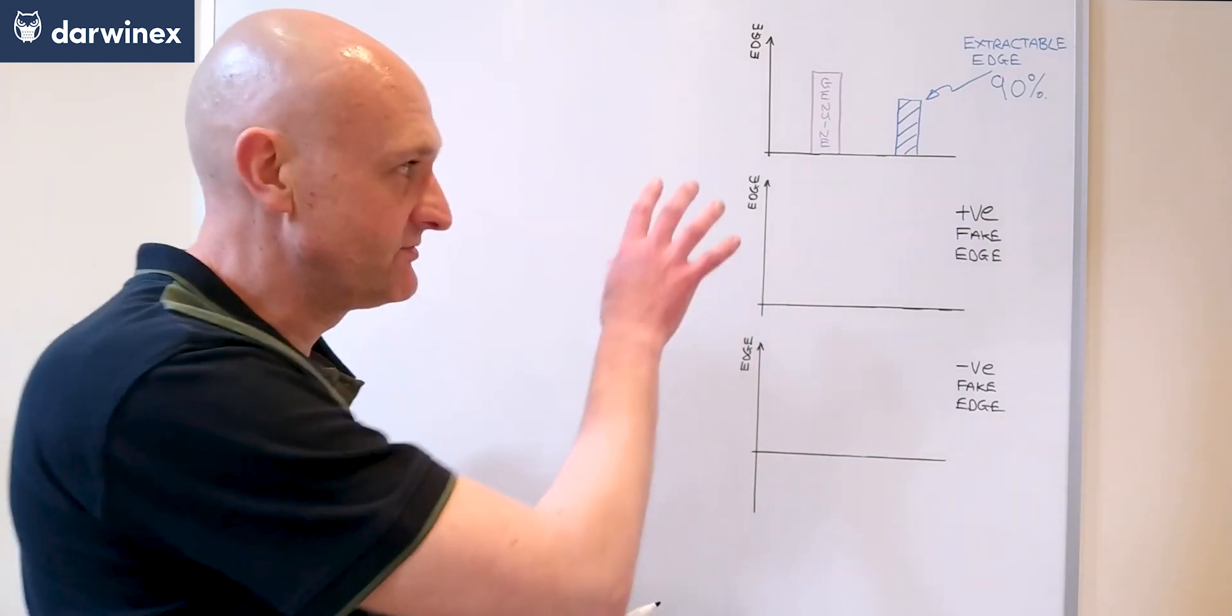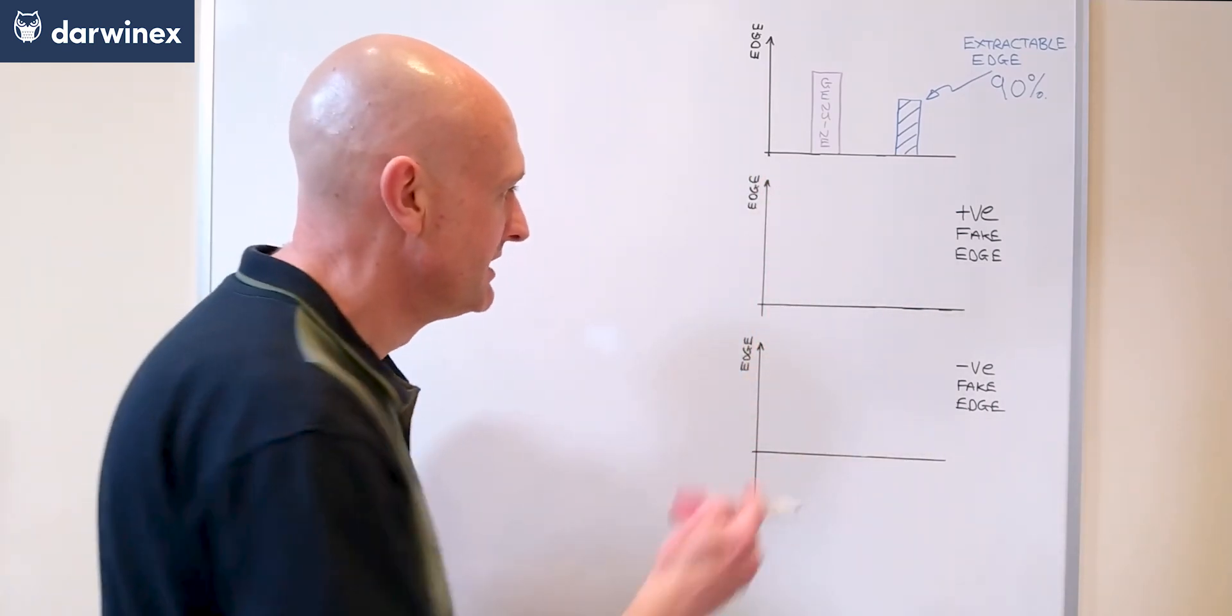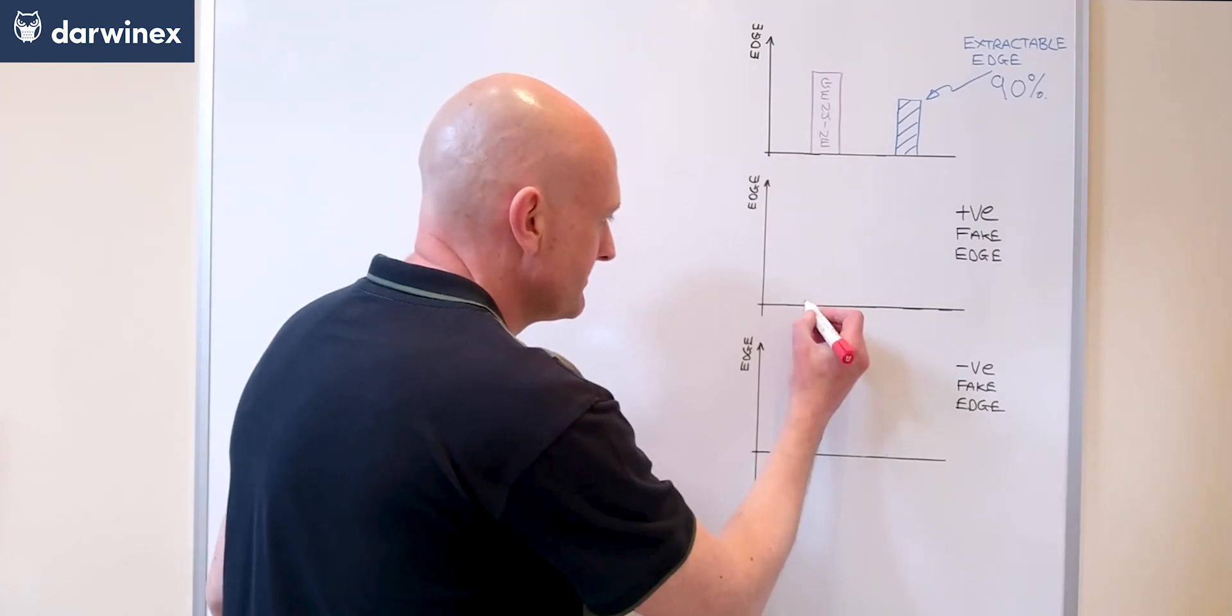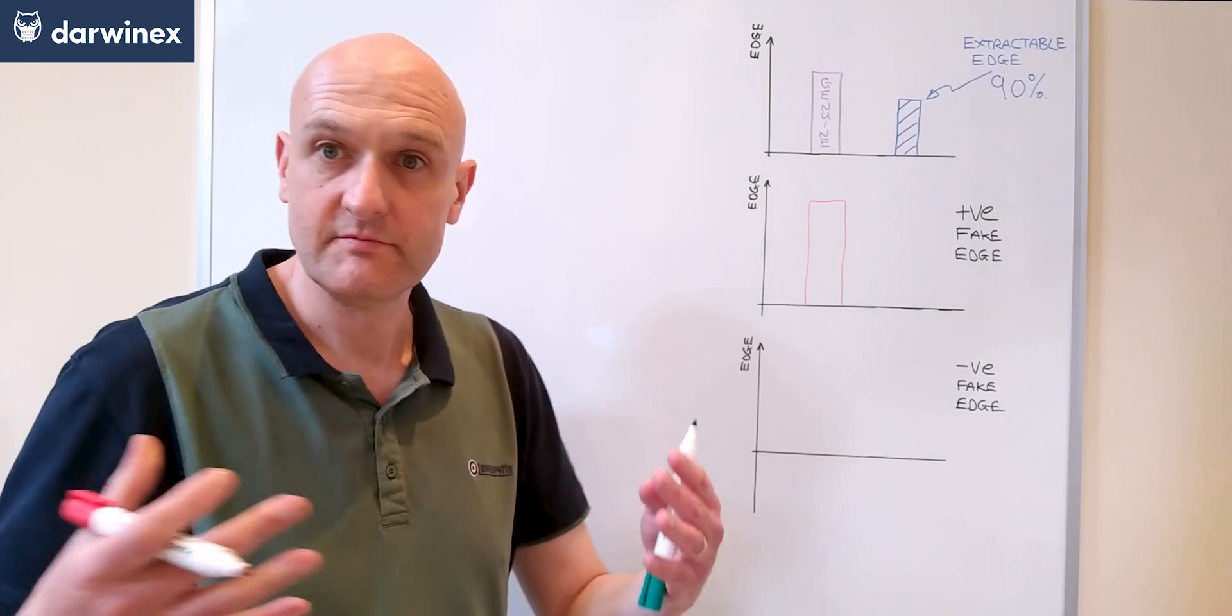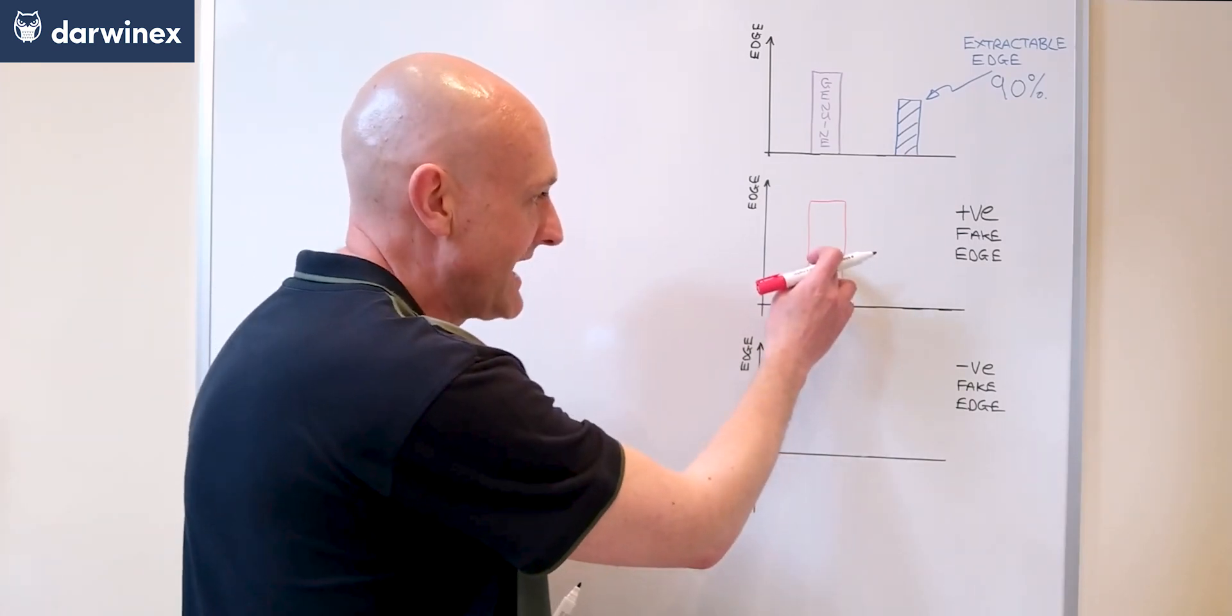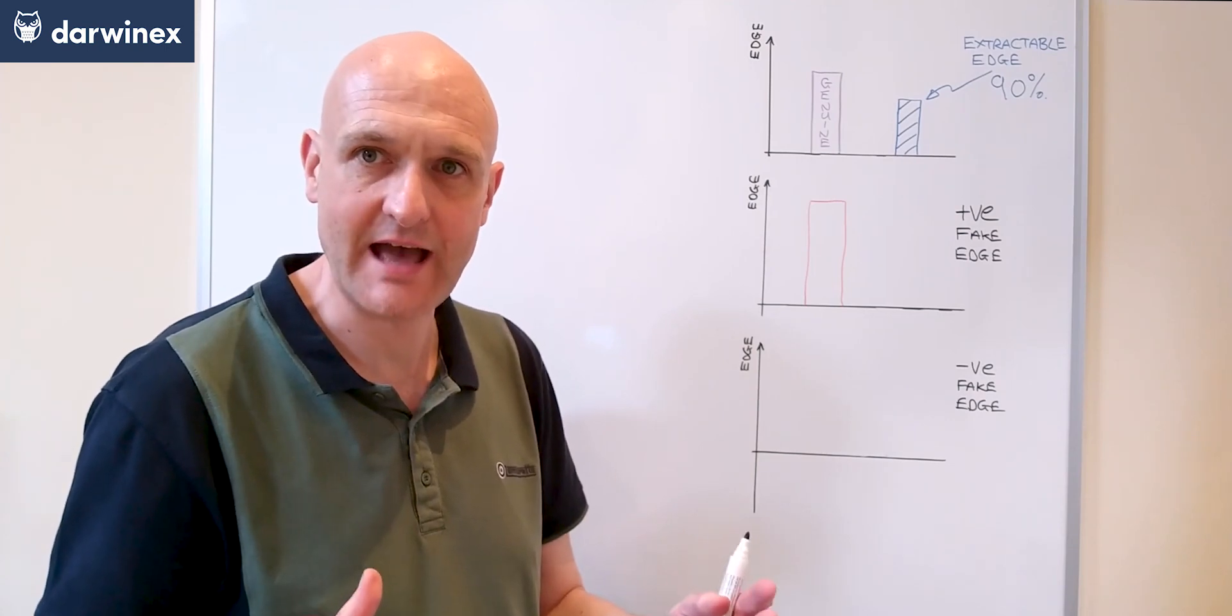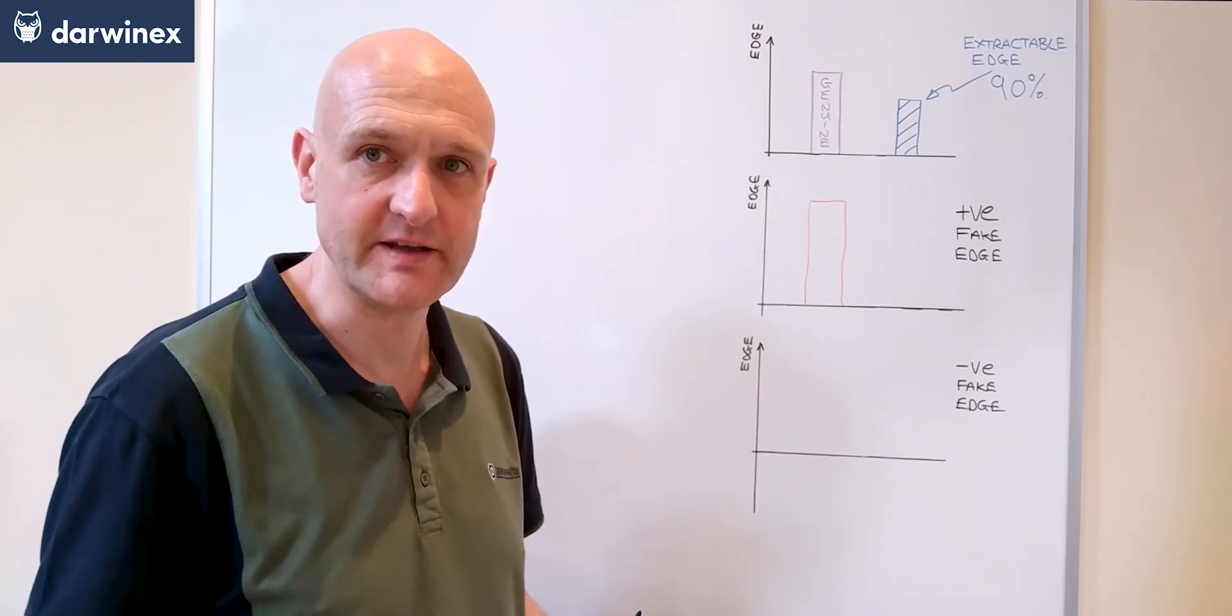Now the first one is the most dangerous to us as algo traders. So in this situation, the parameter set that we observed in the optimization may have a very healthy looking edge, but that's only because of overfitting.